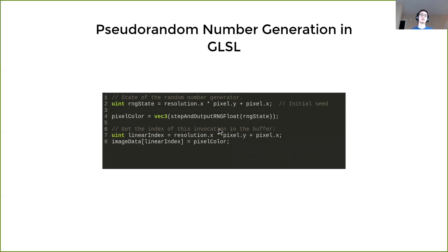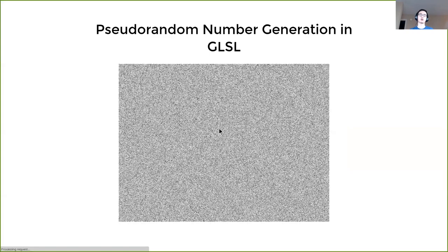Then what we do is we can just visualize our random number generation. For each pixel we generate a random number and use pixel coordinates as individual seed. Then we should get some white noise.